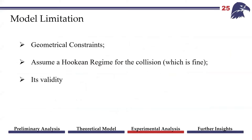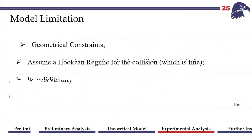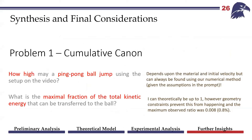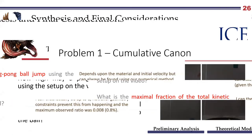Model limitations include the geometrical constraints and assuming a Hookean regime for the collision. For the final considerations: how high may a ping-pong ball jump using the setup in the video? That depends on the material and its velocity, but it's all taken into account in our equation. What is the maximum fraction of total kinetic energy? Theoretically it could be up to one, but because of geometrical constraints the ideal would be around one percent, and the observed was 0.8 percent transferred.